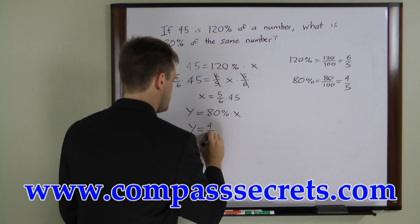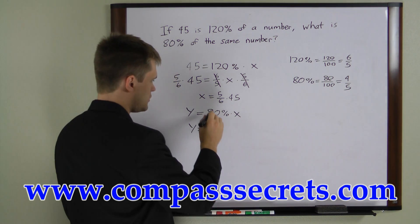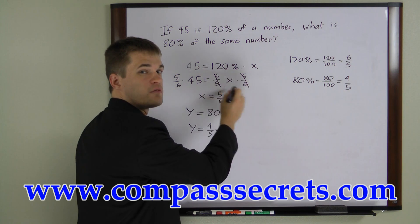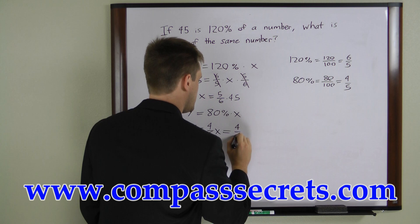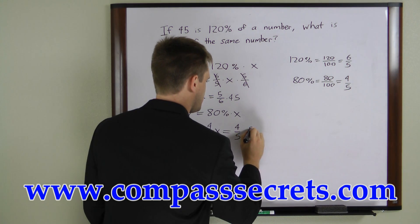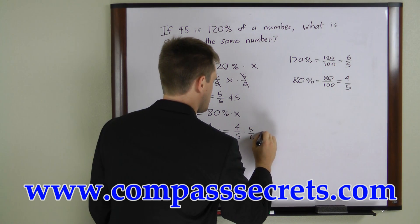y equals 4 fifths times x, or if we substitute this value in for x, we can get y equals 4 fifths times 5 sixths times 45.